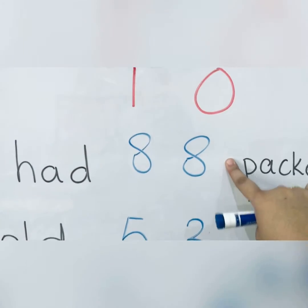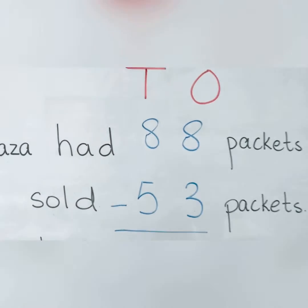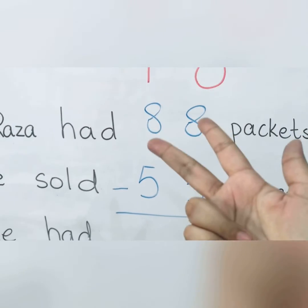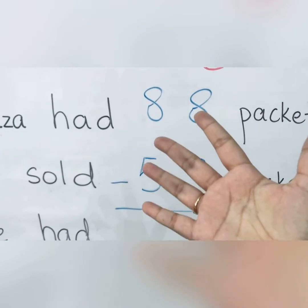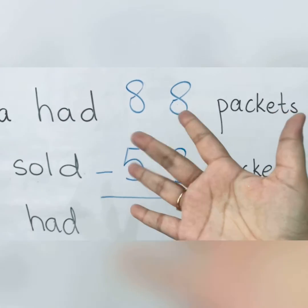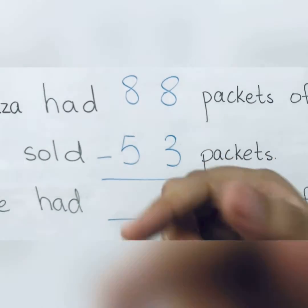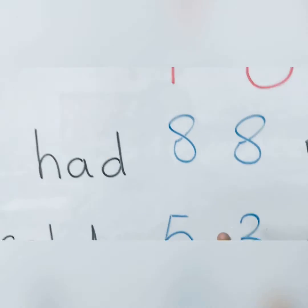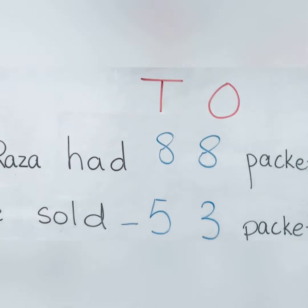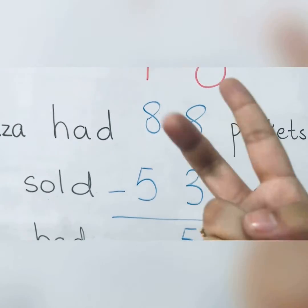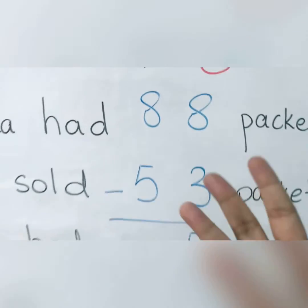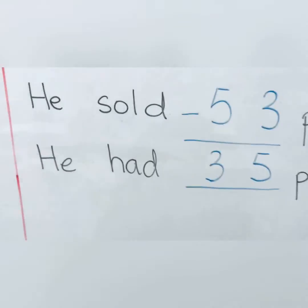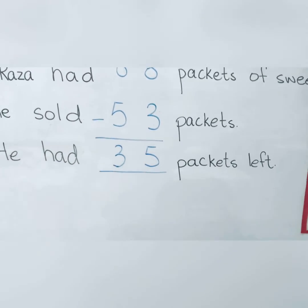Now I have 8 in my ones column, with 8 above and 3 below. Let's start counting from the smaller number: 4, 5, 6, 7, 8. I started from 3 and counted to 8 — 5 is remaining. I will write 5 over here. Now let's move to the tens column. I have 8 above and 5 below. After 5 comes 6, 7, 8. That means 3 is left. So the answer is 35 — he had 35 packets left.